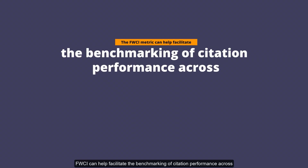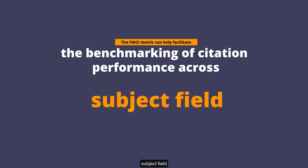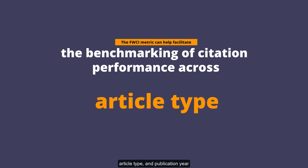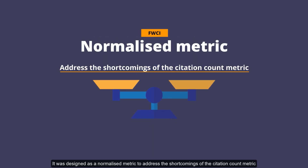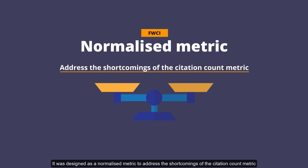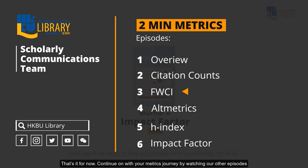FWCI can help facilitate the benchmarking of citation performance across groups of different sizes, subject field, article type, and publication year. It was designed as a normalized metric to address the shortcomings of the citation count metric and can help you provide a more meaningful picture of your research impact. That's it for now. Continue on with your metrics journey by watching our other episodes.